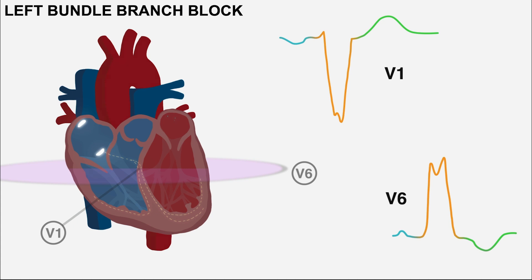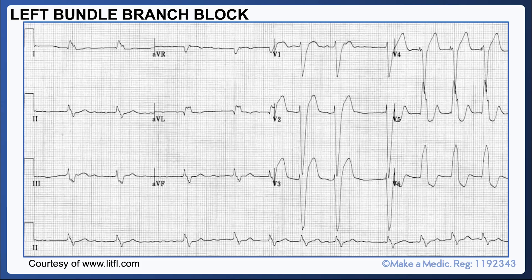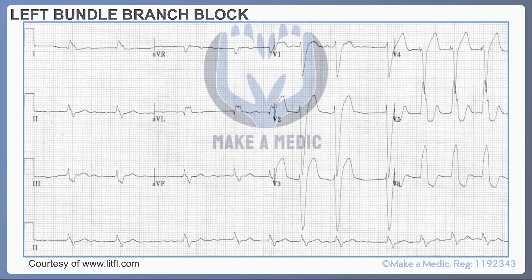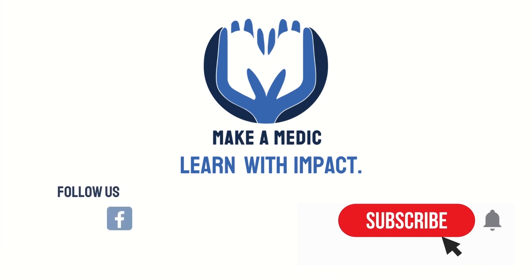As in the case of right bundle branch block, abnormal depolarization will be followed by abnormal repolarization, so you would expect there to be T-wave discordance. This is what a 12-lead ECG looks like in left bundle branch block — you can see large broad QRS complexes going in a negative direction in V1 and a positive direction in V6, and you can see that there's T-wave discordance as well.